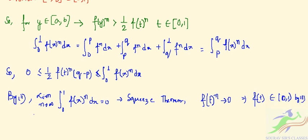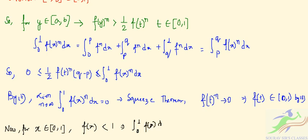Now for x belonging to the closed interval [0,1], we have f(x) less than 1, which implies that integral from 0 to 1 of f(x)dx is less than 1. This is itself a contradiction.